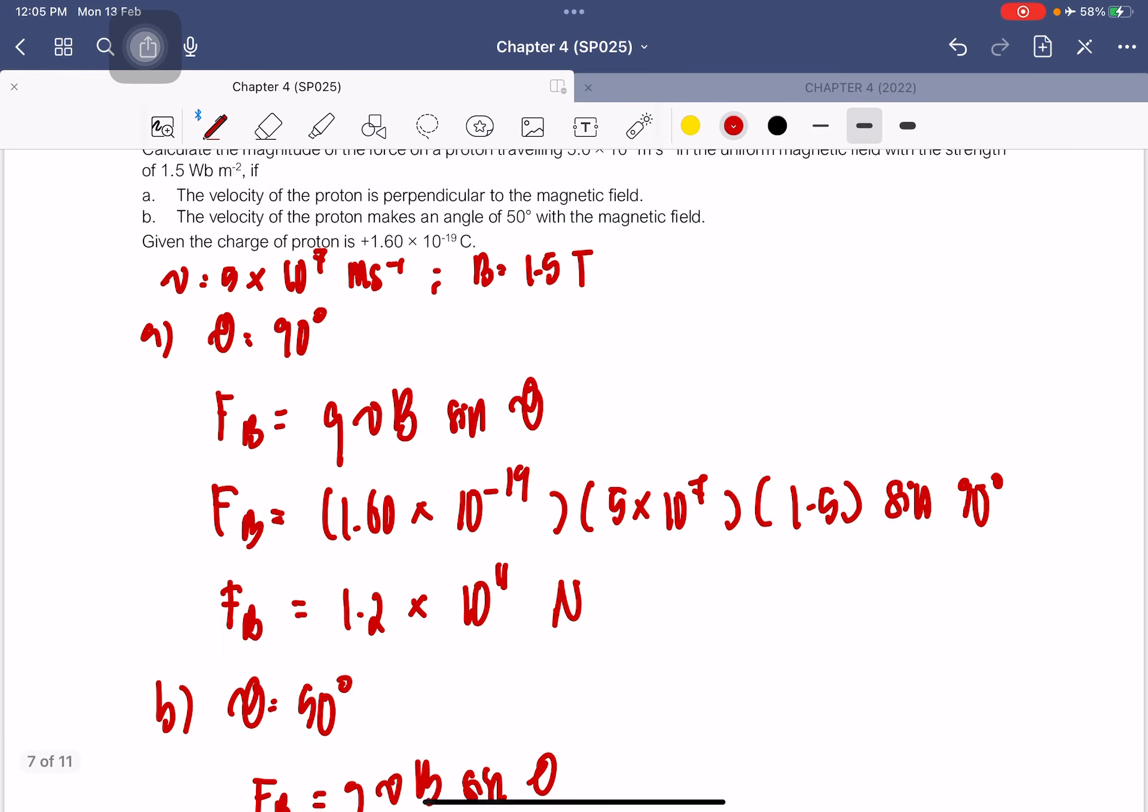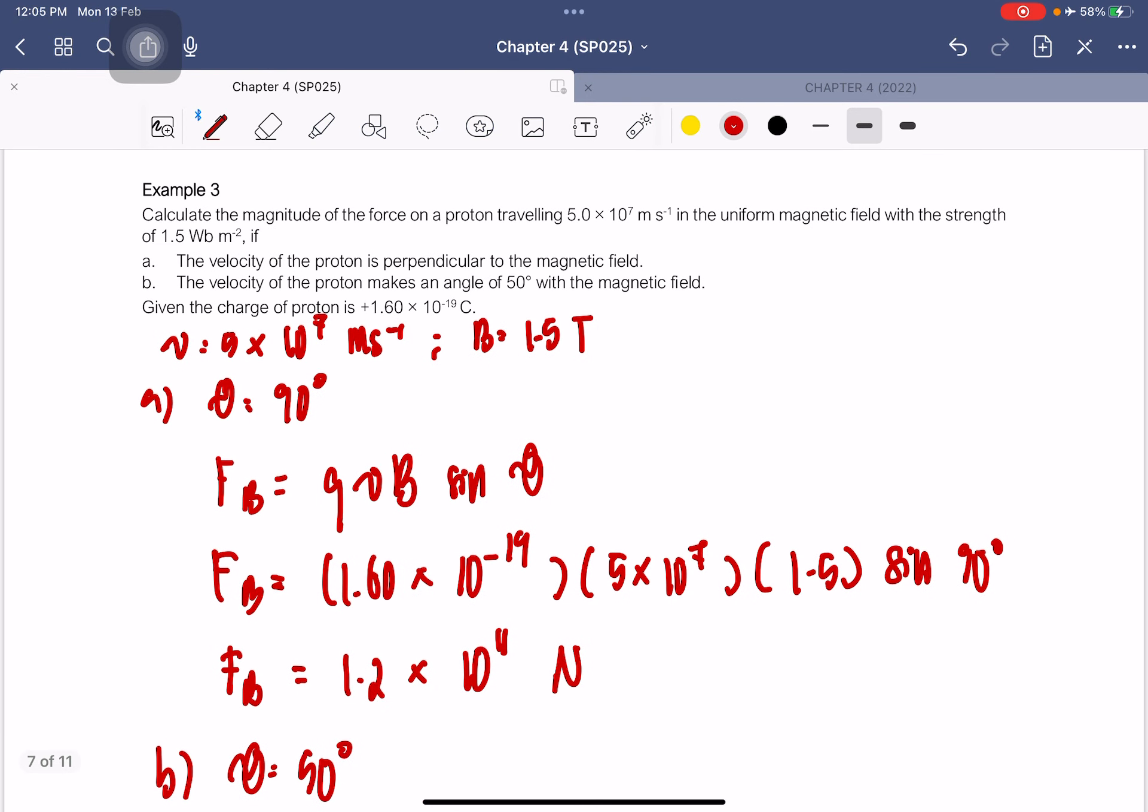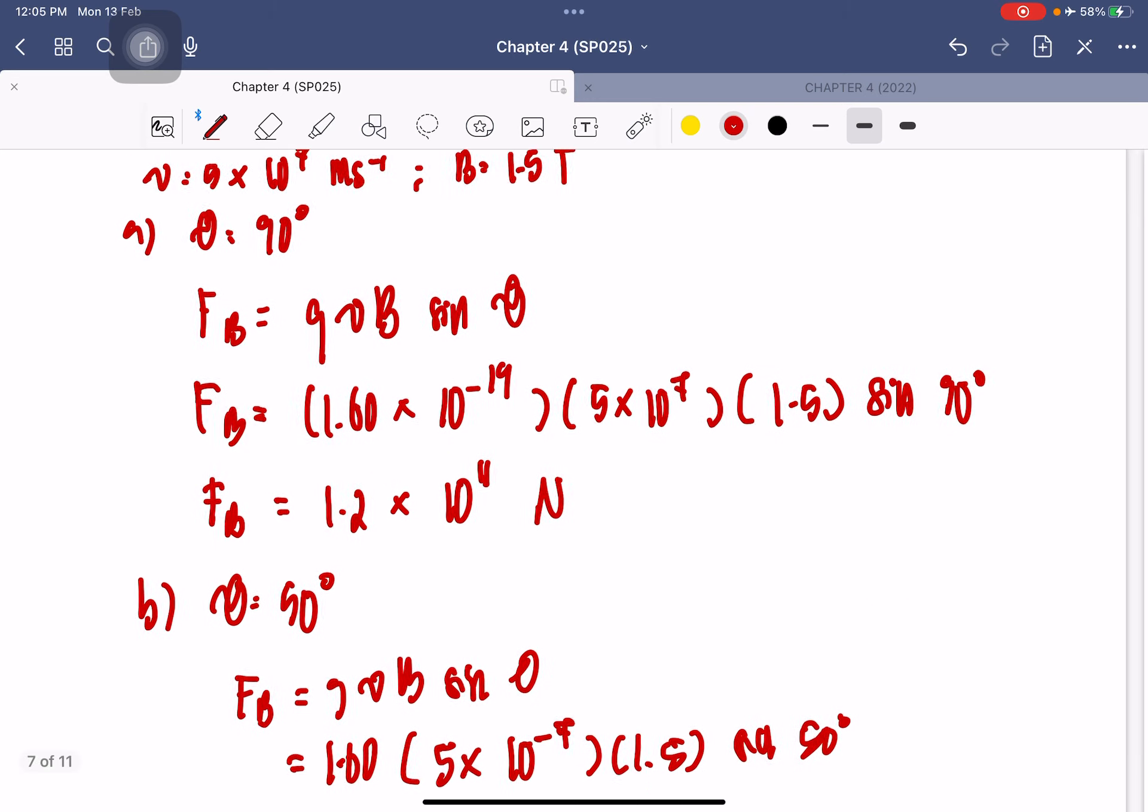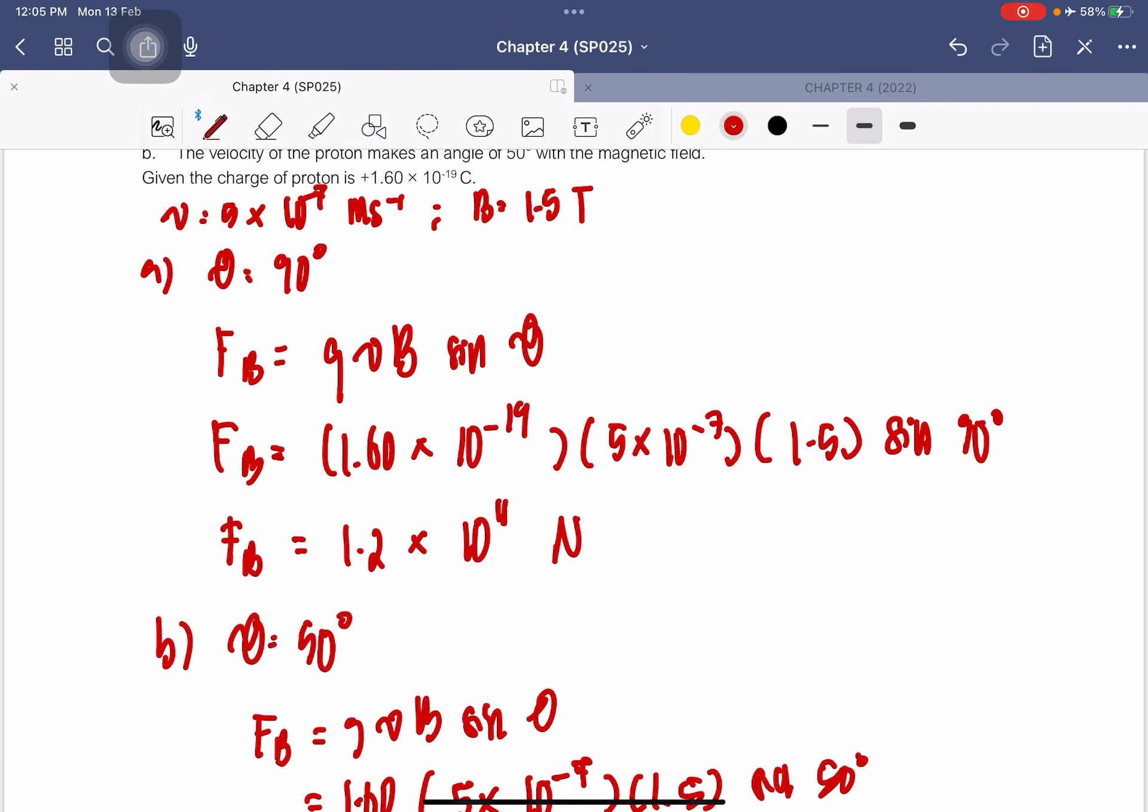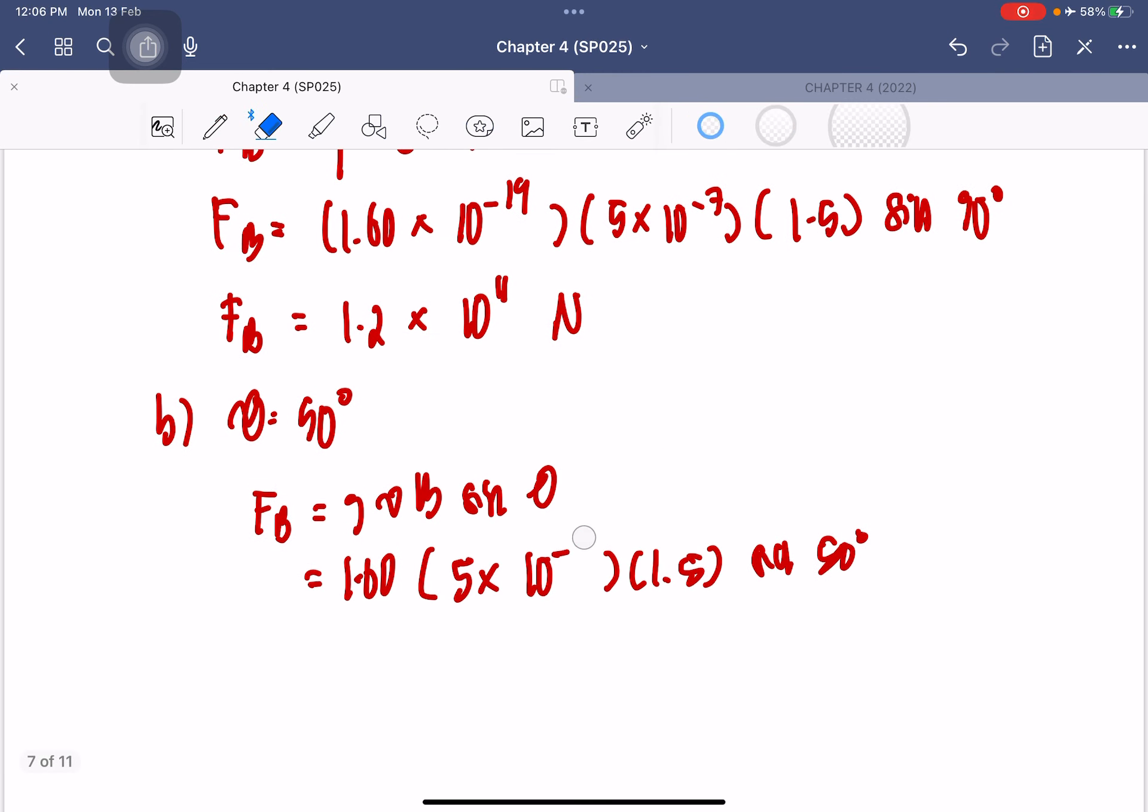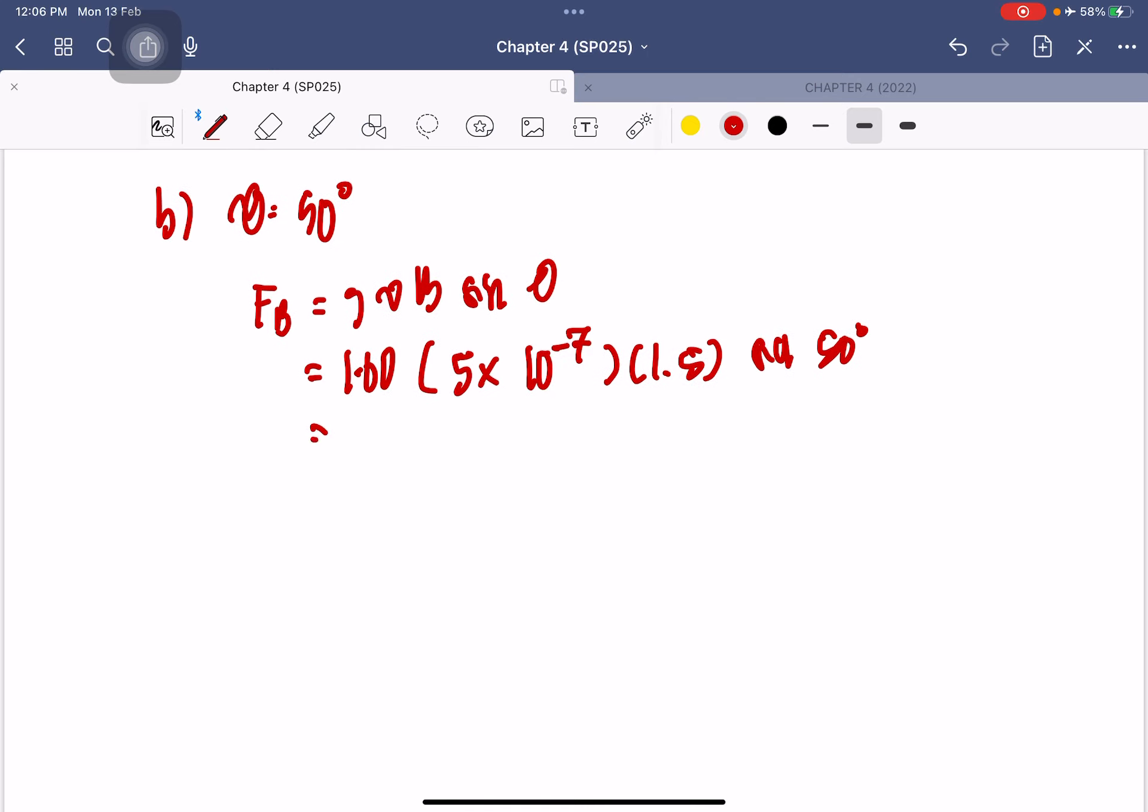So you should get... oh, was it negative 7? It should be 10^-7. I'm gonna add negative 7 later. So in the formula, it's 10^-7. That is 9.19 × 10^-12 newton. Let me just check - did I calculate with 10^-7 or not?